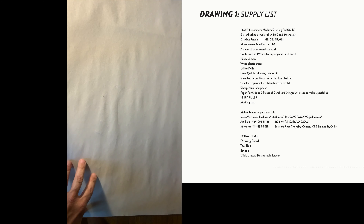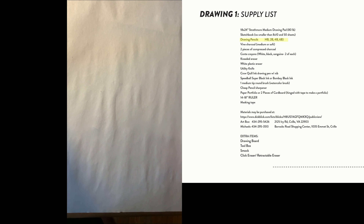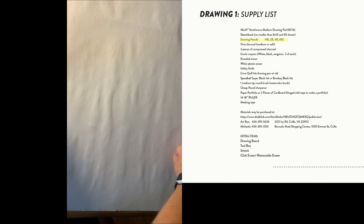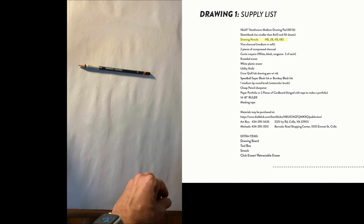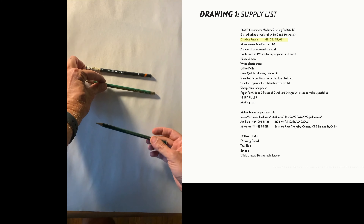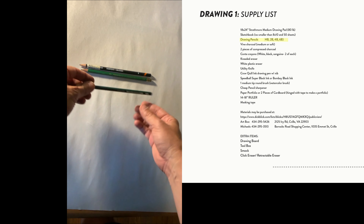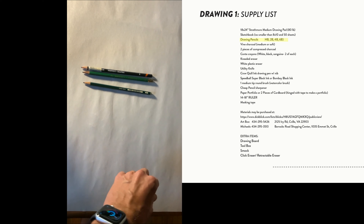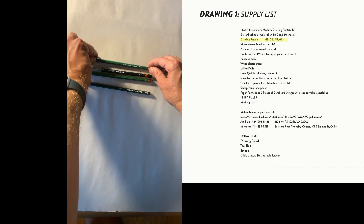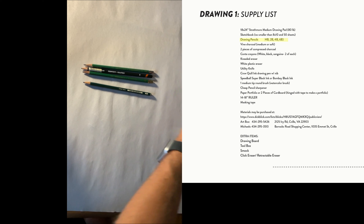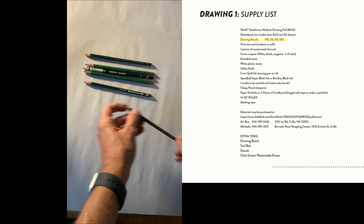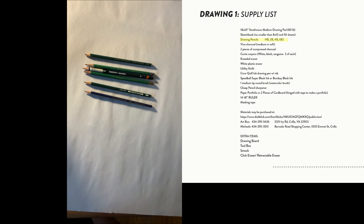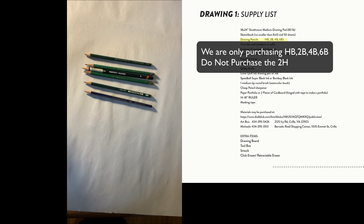Next we'll look at drawing pencils, which are a little different from regular pencils. These are drawing pencils in different forms — a Derwent and a Kimberly. The H pencils are lighter, and as we get into the Bs they get darker, giving us a range of graphite values. Our goal is to have a range from 2H to 6B.